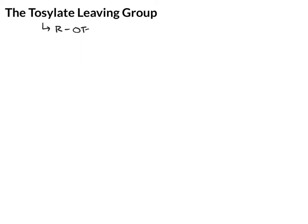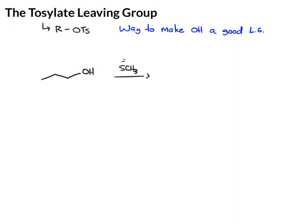The tosylate is a really good leaving group. When you see something with an OTs, that's a tosylate, and basically this is a way to make OH a good leaving group. For example, let's say you have this alcohol and you want to substitute it with an SCH3. If you add SCH3 minus as your reagent, no reaction is going to take place, because OH is such a bad leaving group.